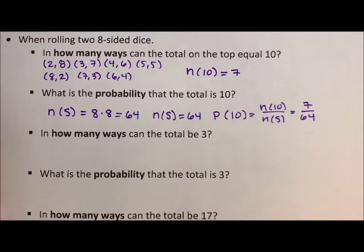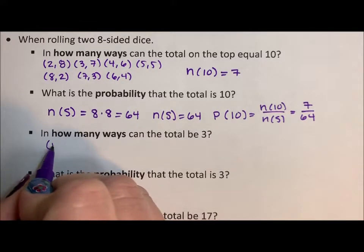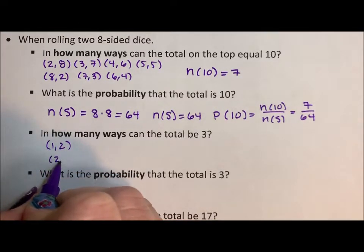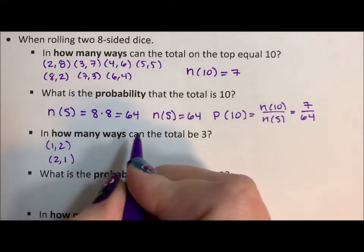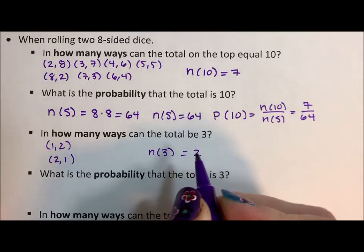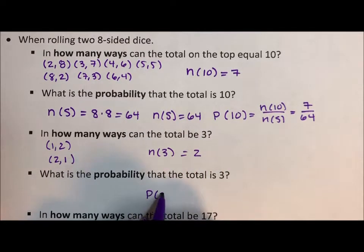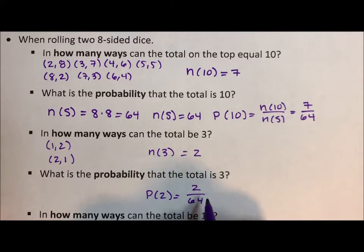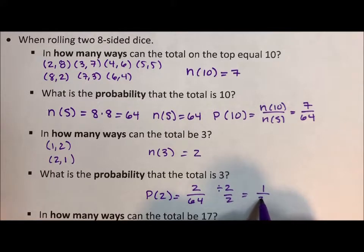In how many ways can the total be 3? One and 2, or 2 and 1. So there are 2 ways to get 3. The probability is 2 over 64, which reduces to 1 over 32.